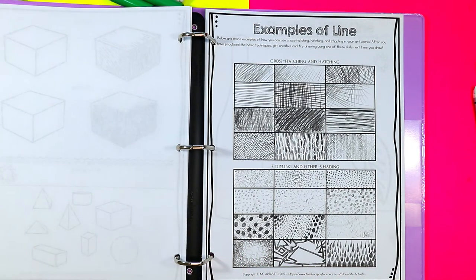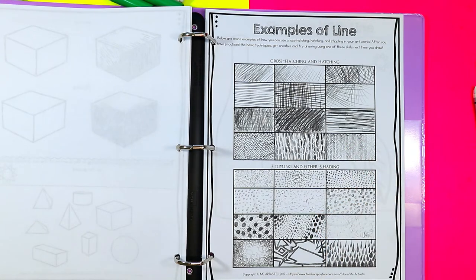There's also different examples of lines. So cross hatching and hatching, how it could be used and used differently.